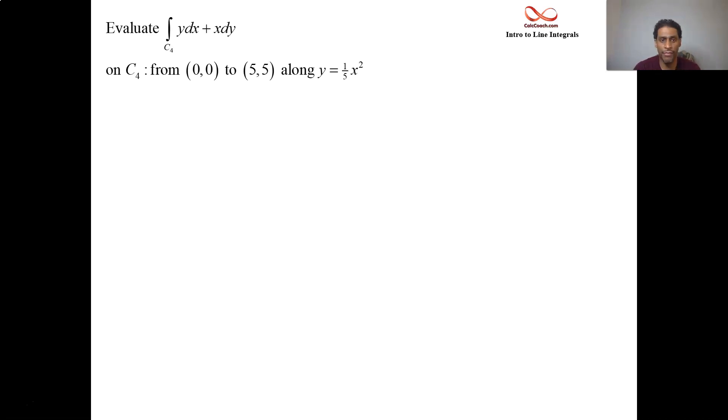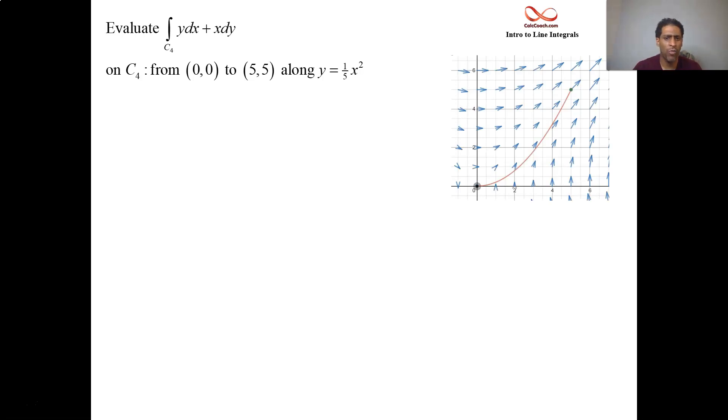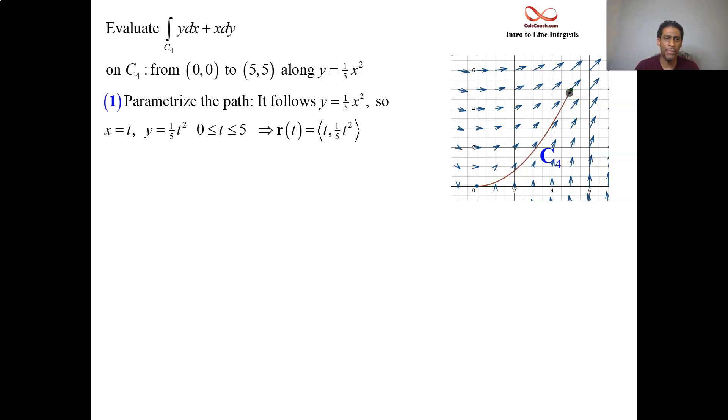See if we have time for one more. Let's do the parabola path. Call it c4, where we go along the path y equals one fifth of x squared. Same starting point, same ending point, 0,0 to 5,5. And something very strange happens. When you know the path, it makes it easy to parametrize it if you know the function y equals f of x. So in step one, when we go to parametrize the path, it's x equals t and y is one fifth of t squared. The formula that you had for y of x now becomes that same function with x being equal to t. So y is a function of t.